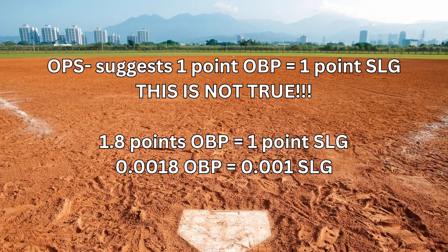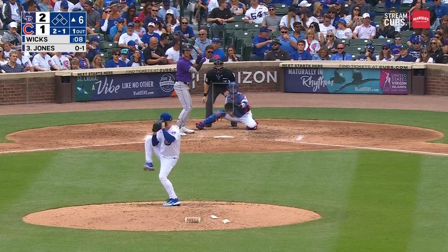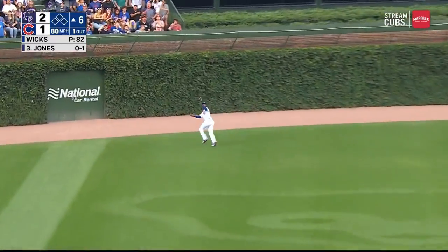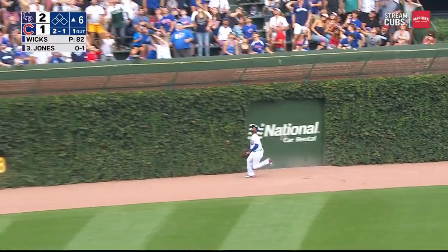OPS puts this all together to include on-base percentage and slugging percentage, but it lacks quality as well, because OPS suggests that one on-base percentage point is equivalent to one slugging percentage point. When in actual fact, when we do the math, it's actually 1.8 points of on-base percentage equal to one slugging percentage point.